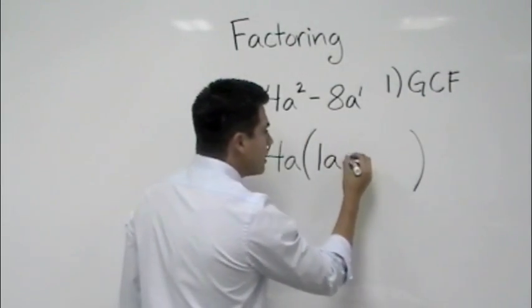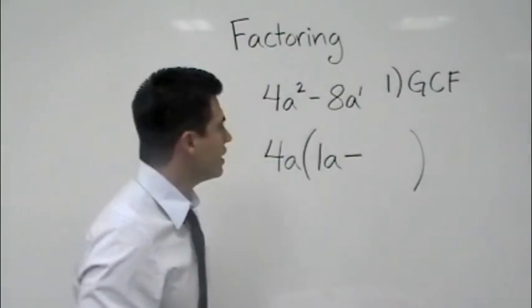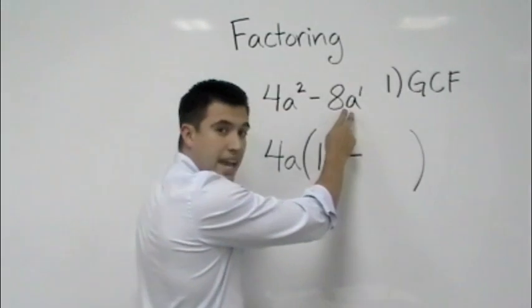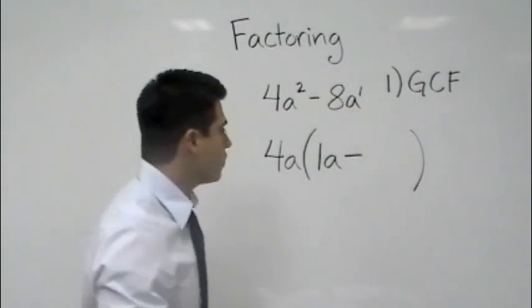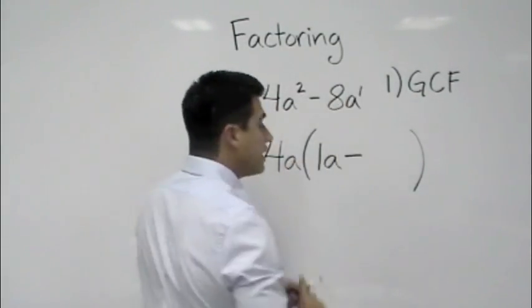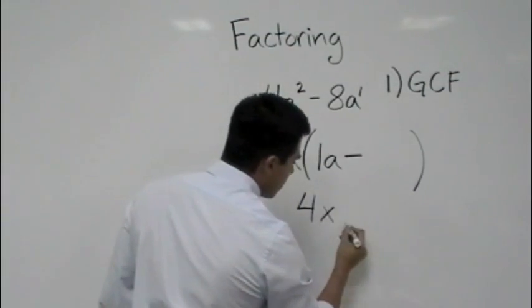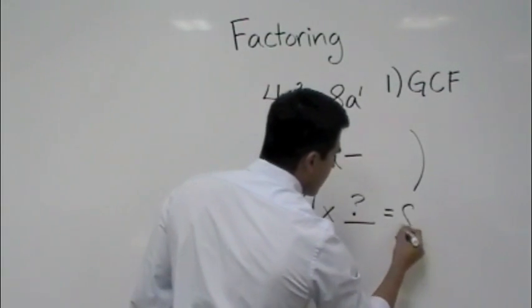Now let's bring this minus sign down and do 4a times what will give me 8a to the first power. Now again we look at the numbers, and if you guys want to see that written out, it would be 4 times what number gives me 8.